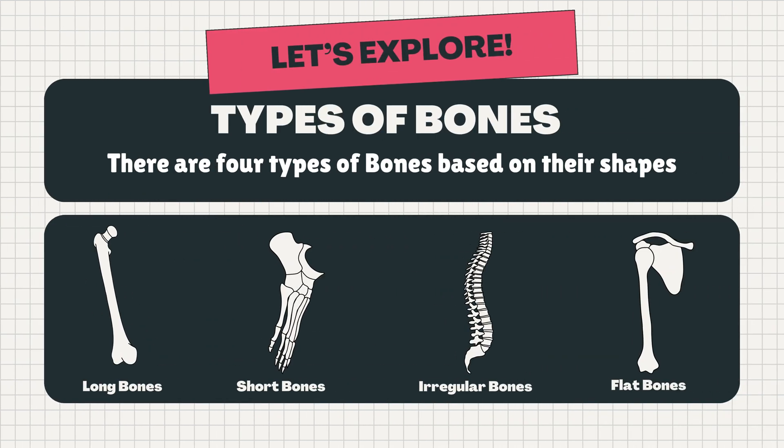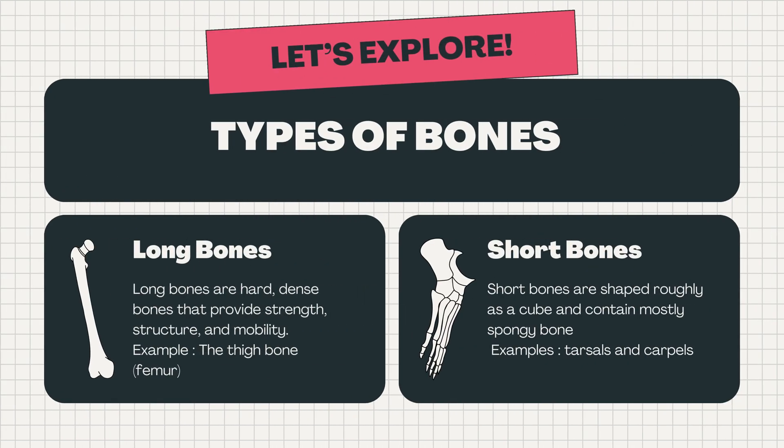Now let's divide bones based on their shape. There are four types of bones: long, short, irregular, and flat. Long bones are hard, dense bones that provide strength, structure, and mobility.